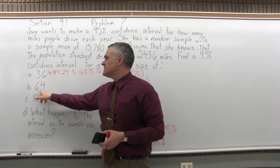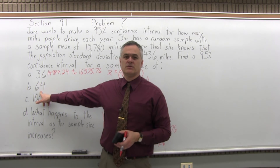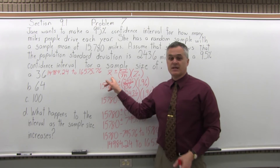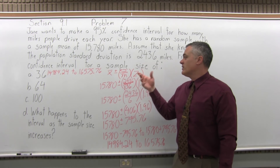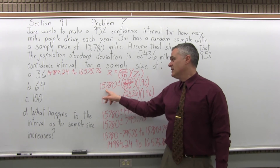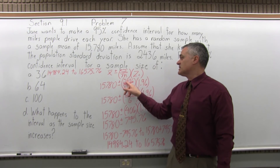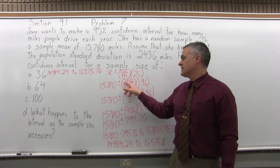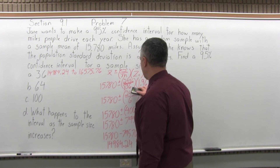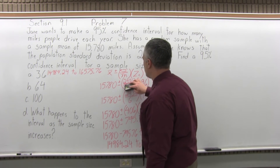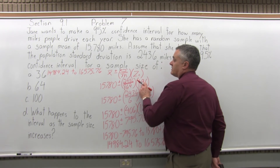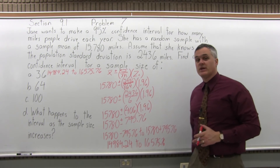So now what happens if we increase the sample size from 36 up to 64? The starting point would be very much the same — we'll use the same confidence interval formula. The sample mean x-bar would still be 15,780, the population standard deviation sigma would still be 2,436, but n changes from 36 up to 64, so instead of square root of 36 underneath, it'll be square root of 64. Z sub c, the confidence coefficient for 95%, is still 1.96.